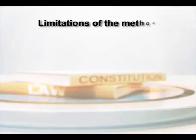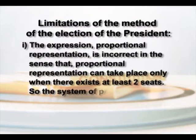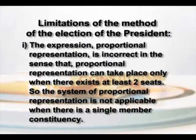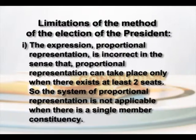A critical examination of the method of election of the President reveals certain inherent limitations. First of all, the expression 'proportional representation' is incorrect in the sense that proportional representation can take place only when there exist at least two seats. In other words, the system of proportional representation is not applicable in a single-member constituency. Professor M.P. Sharma rightly pointed this out in 1950 and argued in favour of a preferential or alternative vote system as a replacement.